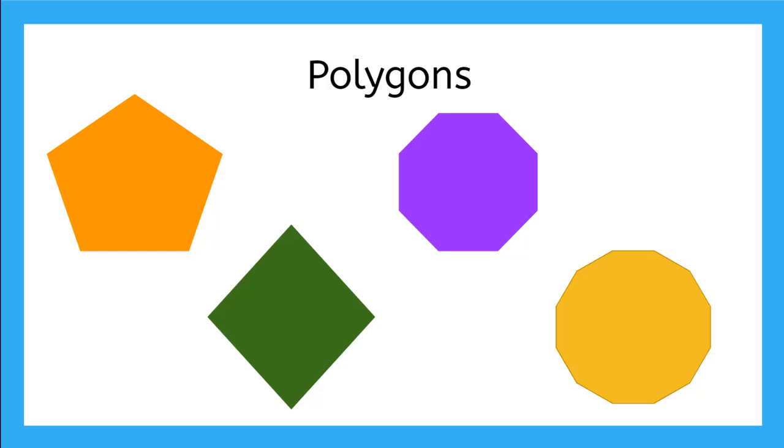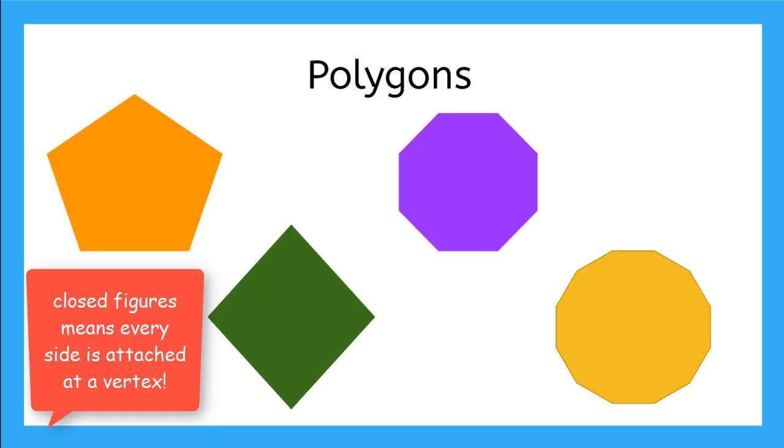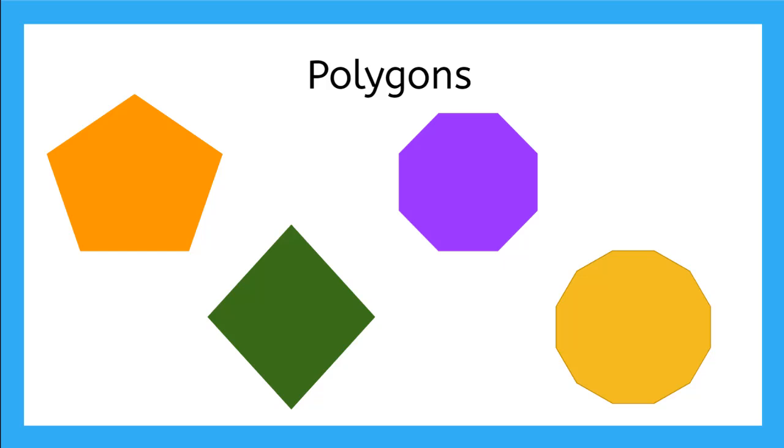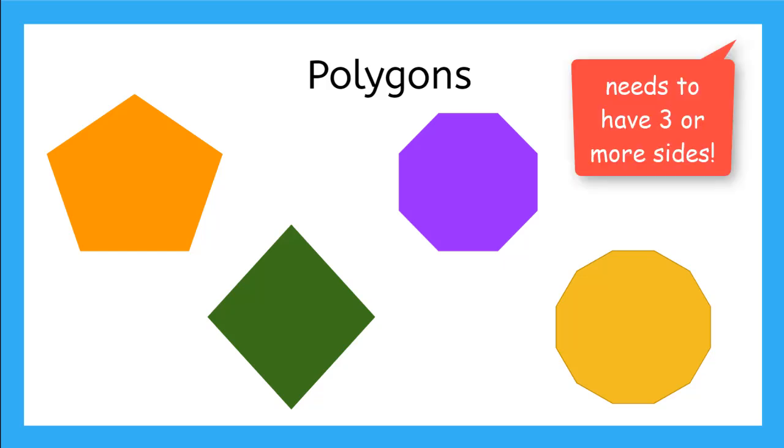These shapes are all examples of polygons. Notice that all of these are closed figures. That means that all of the sides are attached at a vertex, and they all have three or more line segments or sides.